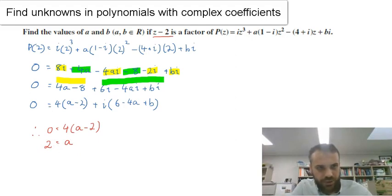and we should also be able to say, therefore 0 is equal to 6 minus 4a, which is 4 times 2, plus b. And we can solve that for b now. And when you rearrange and solve that for b, b is going to be equal to 2.